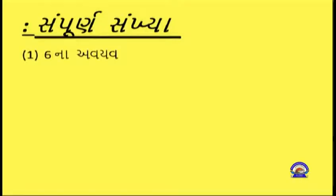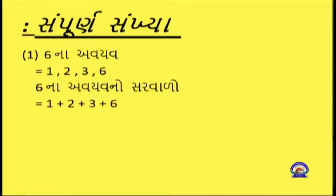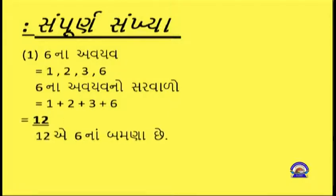હવે આપણે સંપૂર્ણ સંખ્યા સમજીશું. સ્ક્રીન પર જોઈએ: 6 ના અવ્યયો 1, 2, 3, 6. 6 ના અવ્યયોનો સરવાળો 1+2+3+6 = 12, જે 6 ના બમણા છે.